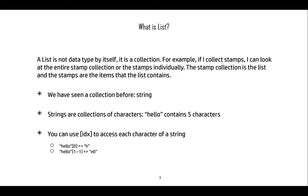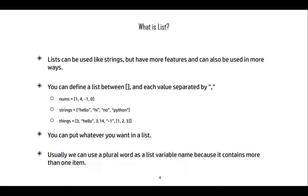We've already seen a collection, which is called the string. The string is a collection of characters. For example, the string 'hello' has five characters, and we can access each character individually using the index. So 'hello' at index zero is 'h', and 'hello' at indices one through minus one is everything but the first and last letters.